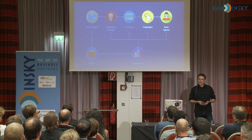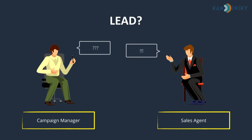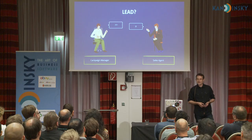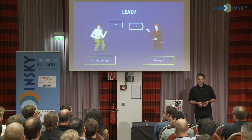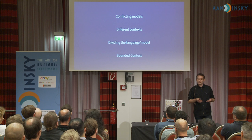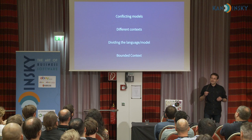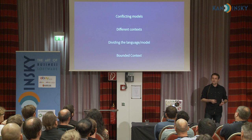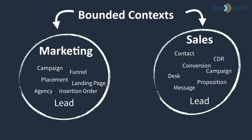For example, in our company we have campaign managers and sales agents, and for them the term 'lead' means very different things. For a campaign manager, a lead is merely an event that somebody has shown interest in a product and submitted their contact details. For sales agents, a lead is a much more complex entity with a lot of data and rich behavior. In such cases of conflicting models, DDD calls for splitting the ubiquitous language and explicitly defining bounded contexts.